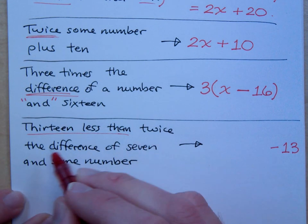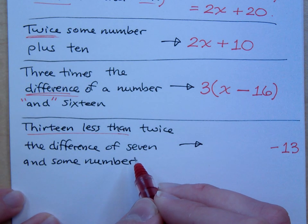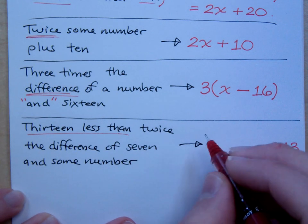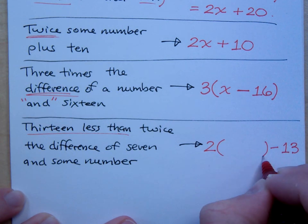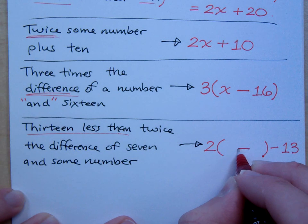So I'm taking thirteen away from what? Twice the difference. How do you start writing twice the difference? It's twice but it's twice a group, right? And that group is the difference so subtraction.